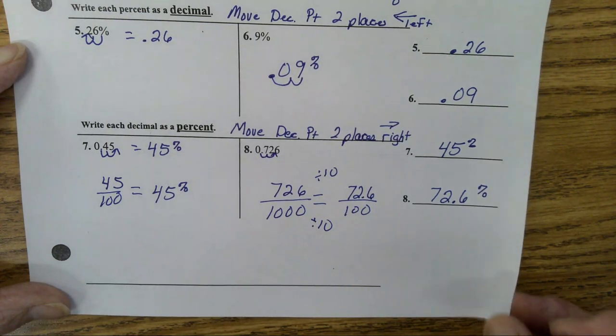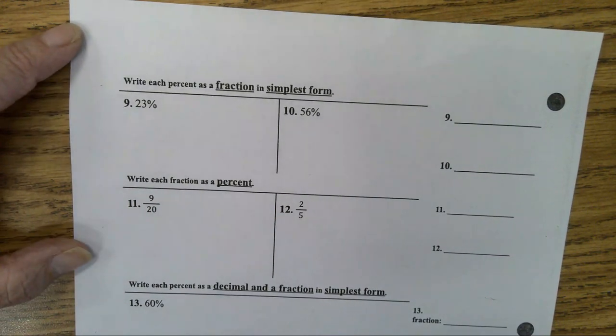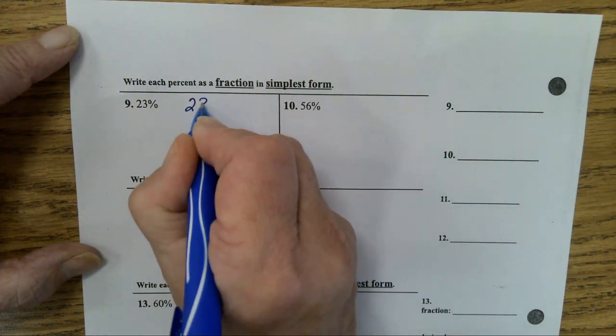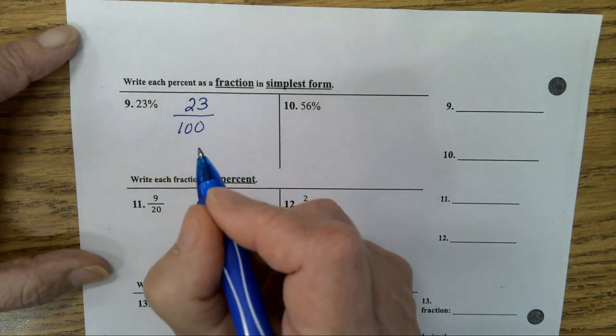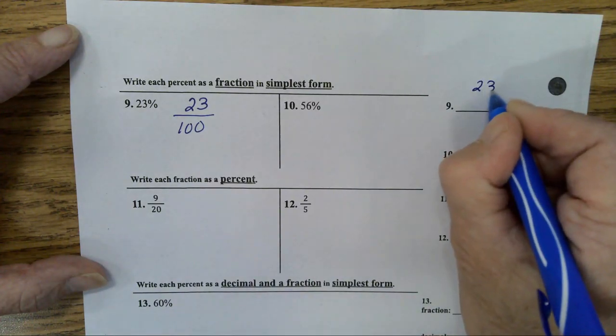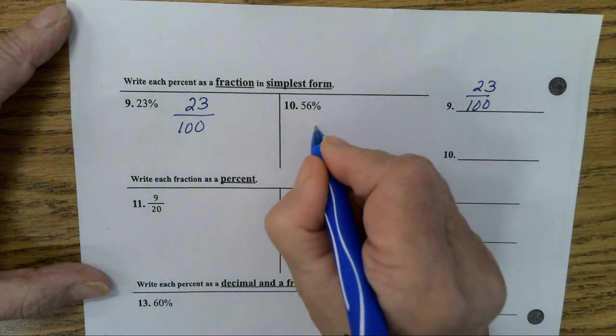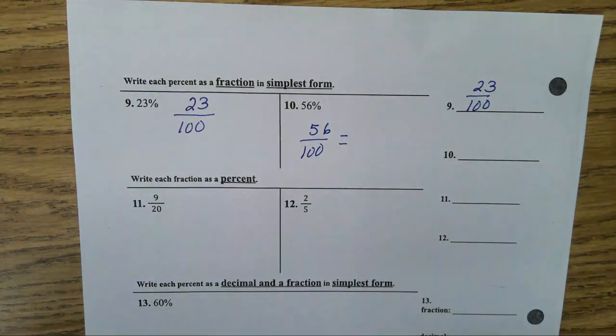All right, let's go to the back page. Write each percent as a fraction in simplest form. Okay, so 23% is 23 over what? One hundred. And 23 is a prime number, isn't it? So, it will not simplify. It's 23 over a hundred. That's simplified.